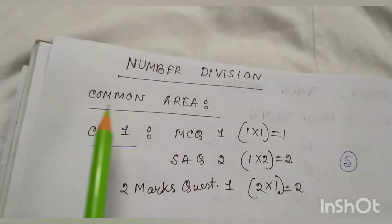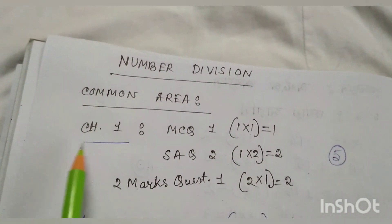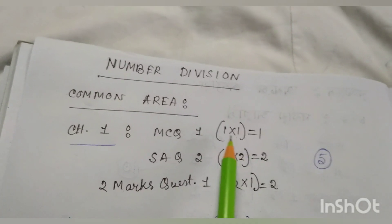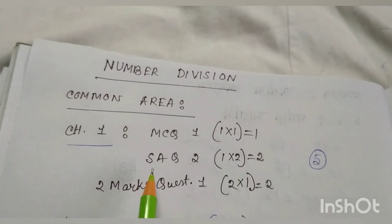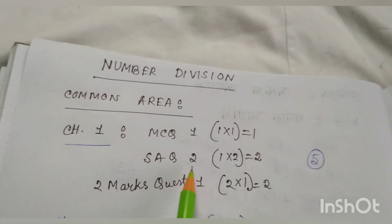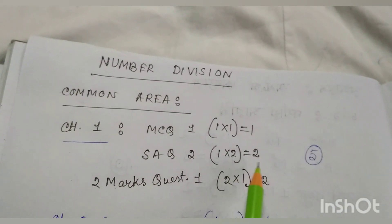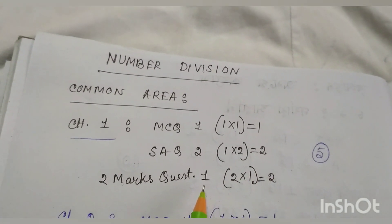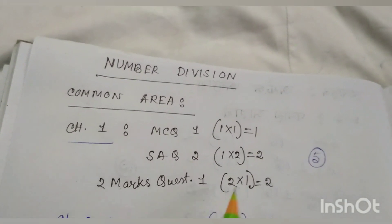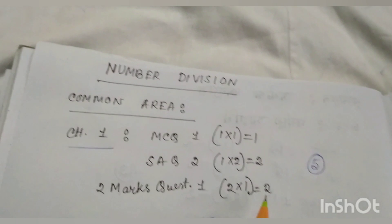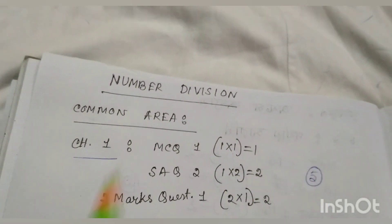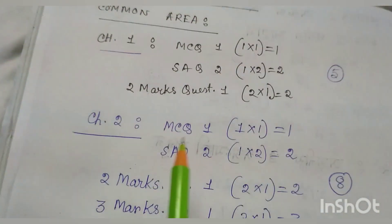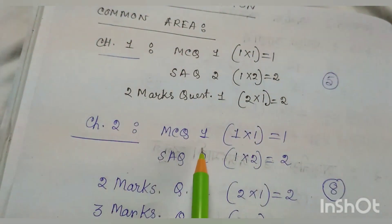Number Division, Common Area: Chapter 1 — 1 MCQ, 1×1 = 1 mark; 1 question of 2 marks, 1×2 = 2; and 1 question of 2 marks, 1×2 = 2. Total 5 marks from Chapter 1. Chapter 2 — 1 MCQ, 1×1 = 1 mark.